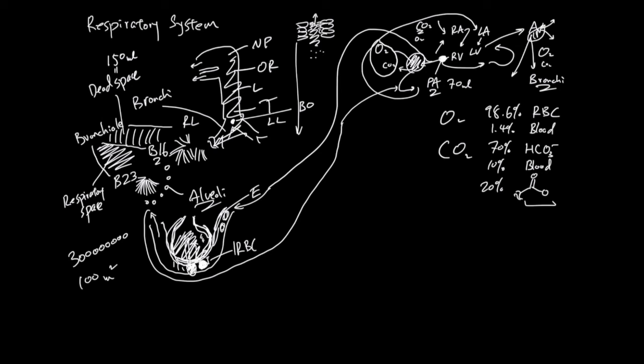But as you go deeper, branch 0, branch 2, down the path, the cells are going to turn into cuboidal epithelial cells and cilia will decrease in the number.